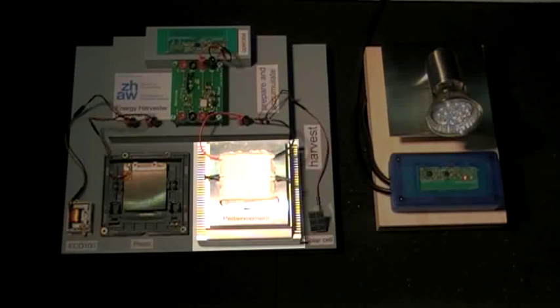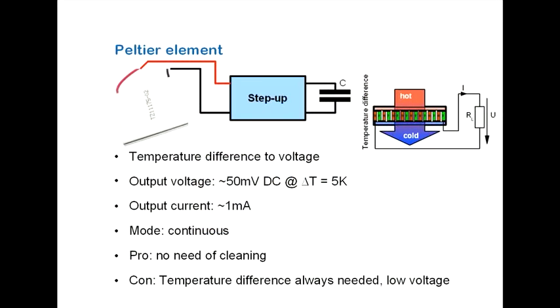The Peltier element works on the Seebeck effect. It produces current out of a temperature difference. It can generate some milliampere, but the voltage is around 50 millivolt, which is extremely small. When there is a heat flow through the element, it will always generate energy. When it is installed, it does not need any support like cleaning.